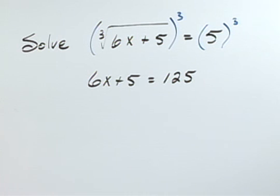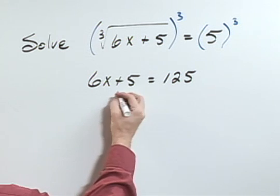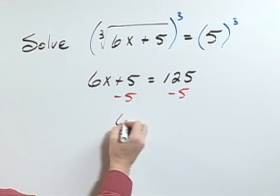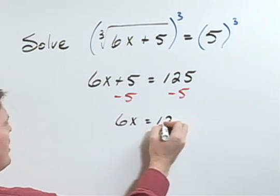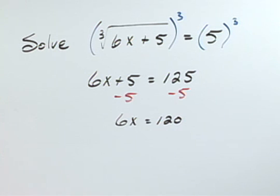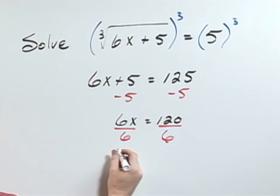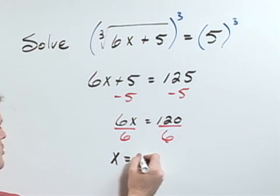Now I can subtract 5 from both sides, so that I have 6x equals 120, and then divide both sides by 6. That gives me my answer of x equals 20.